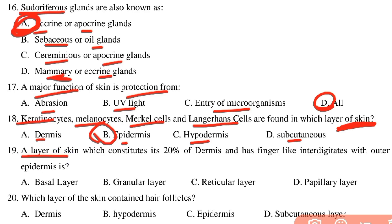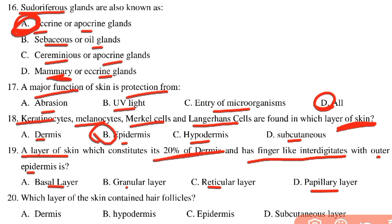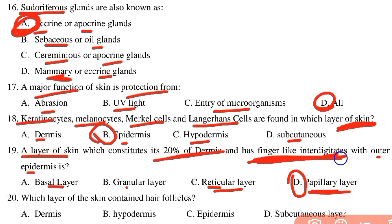Which layer of skin constitutes about 20% of the dermis and has finger-like interdigitations with the outer epidermis? The options are basal layer, granular layer, reticular layer, and papillary layer. The papillary layer is the correct answer — it is the superficial portion of the dermis with finger-like projections.